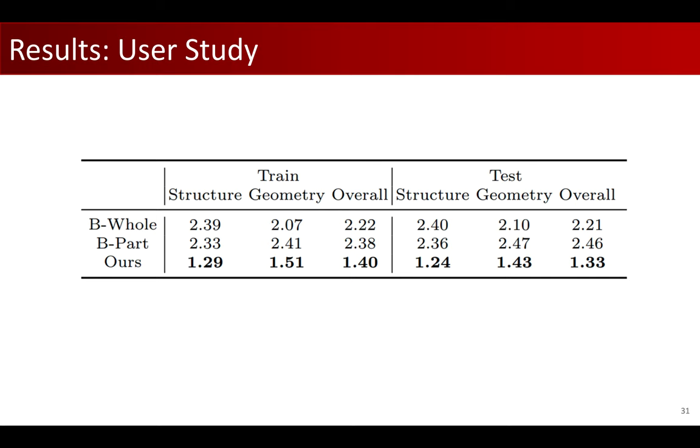We also showed that our method learned disentangled representations of shape structure and geometry. Here, each row shares the same Gaussian noise Z summarizing the same geometric information, and every column is conditioned on the same part tree structural input. We achieved controllable shape interpolation along both the geometry and structure axis.